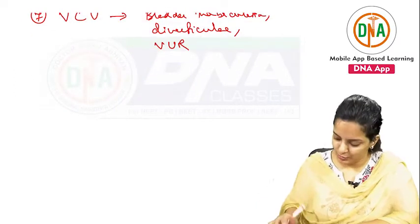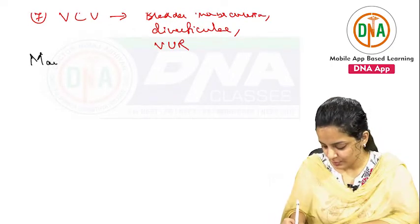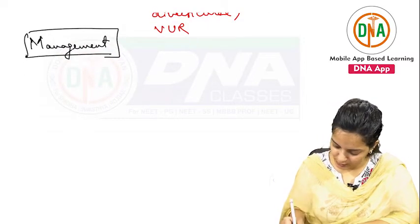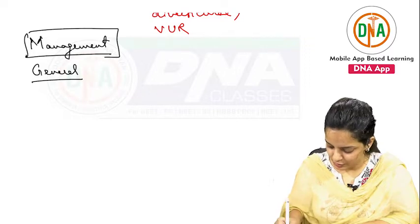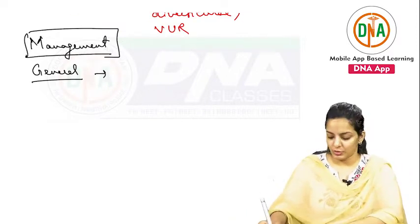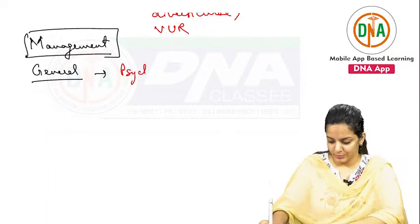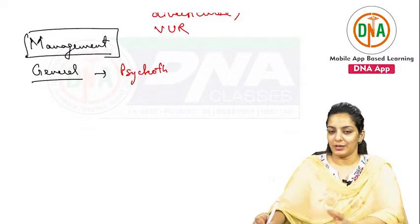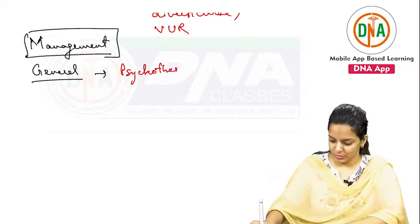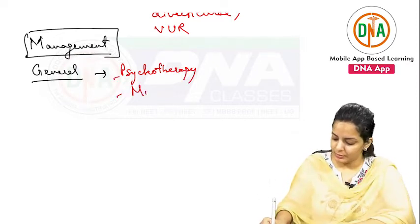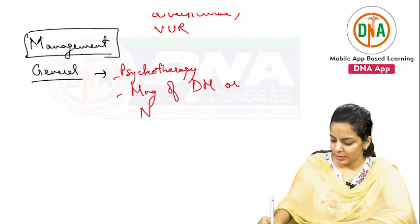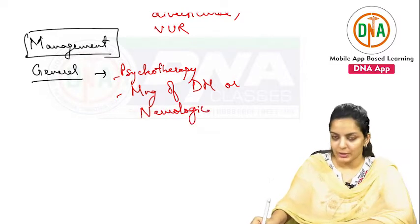For management, first there is general management. This involves psychotherapy for the patient, and if any medical illness is present — such as diabetes mellitus or a neurological condition — that also needs to be managed.